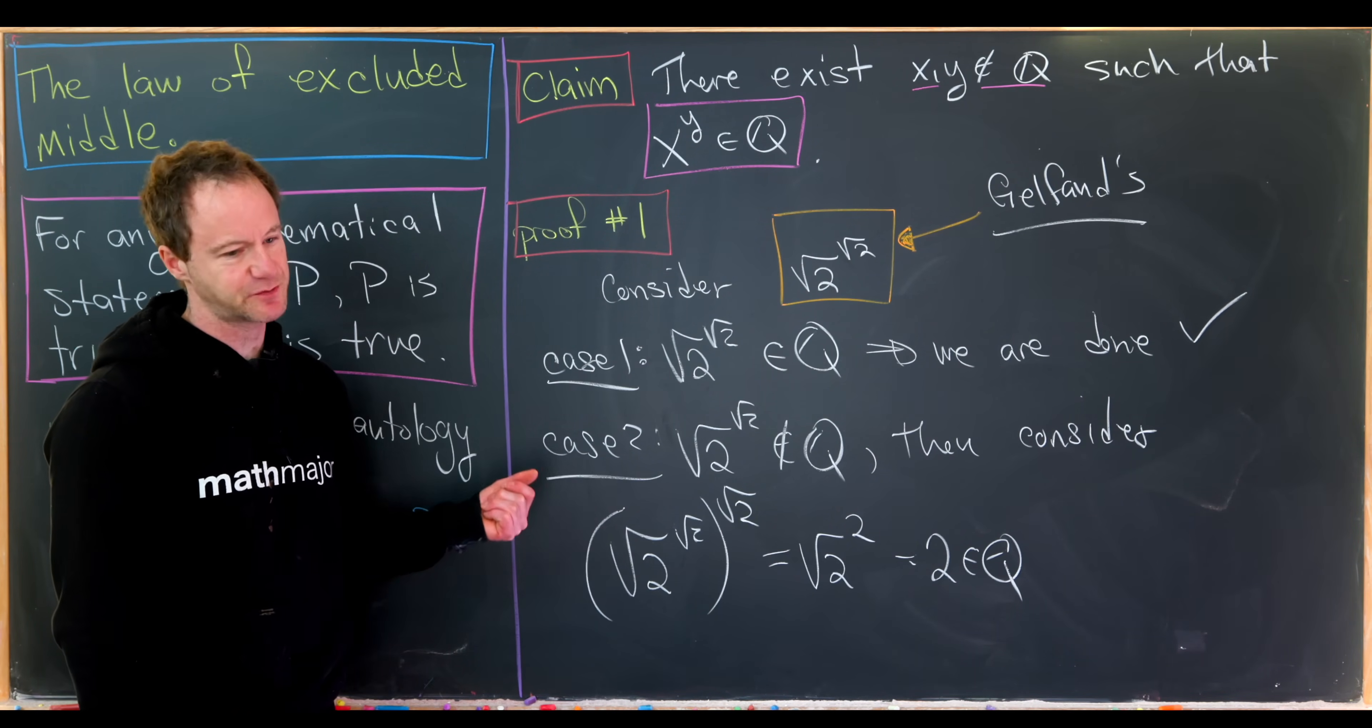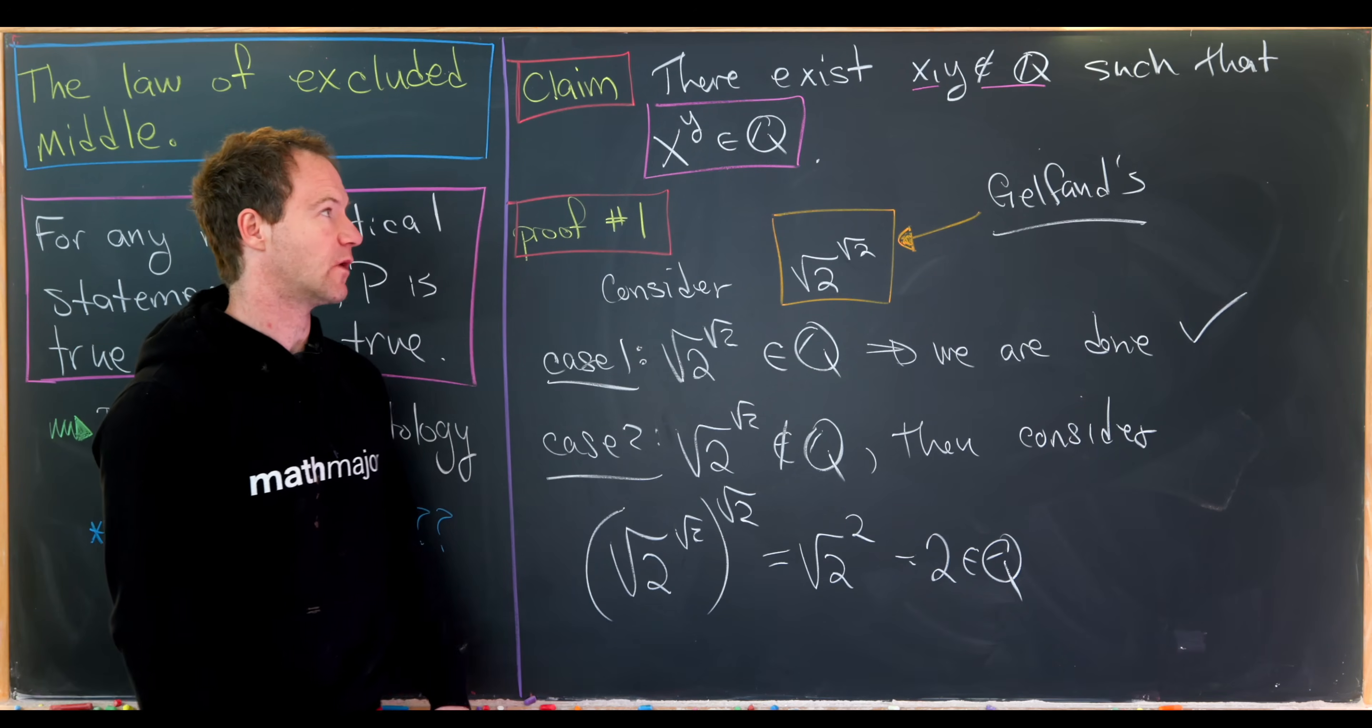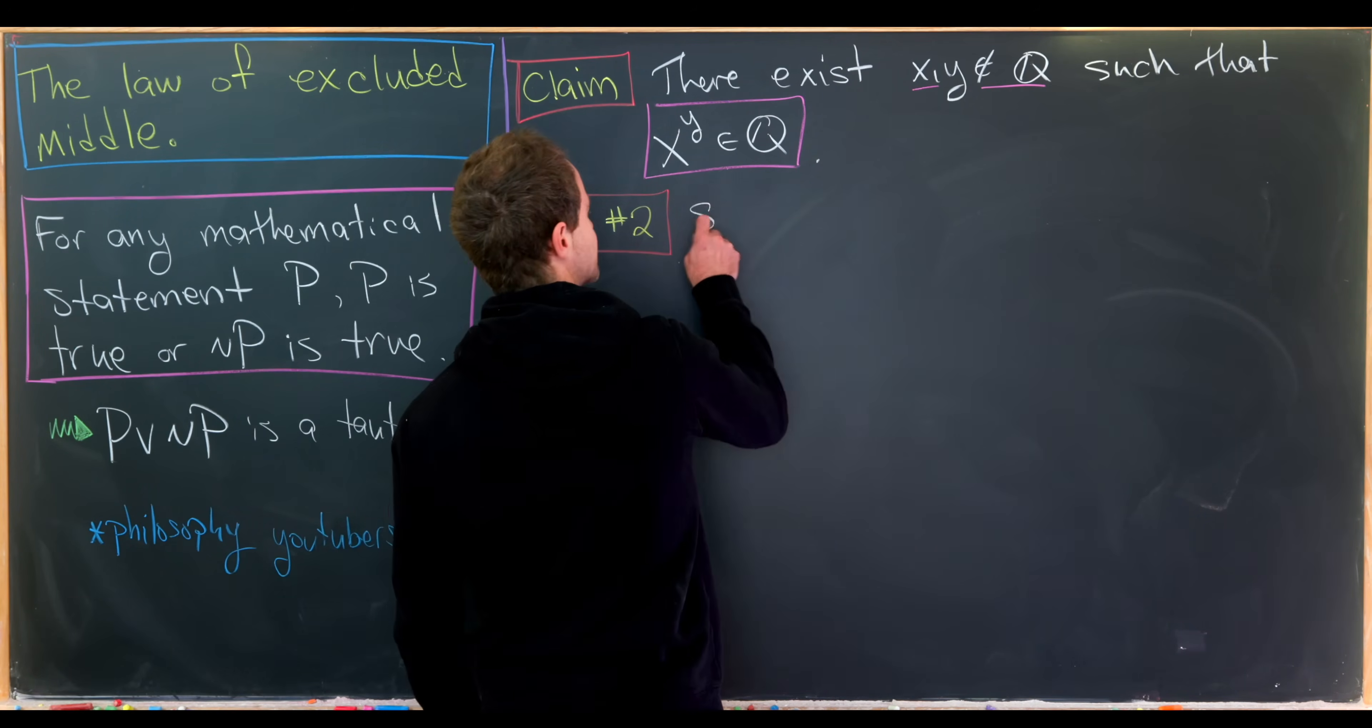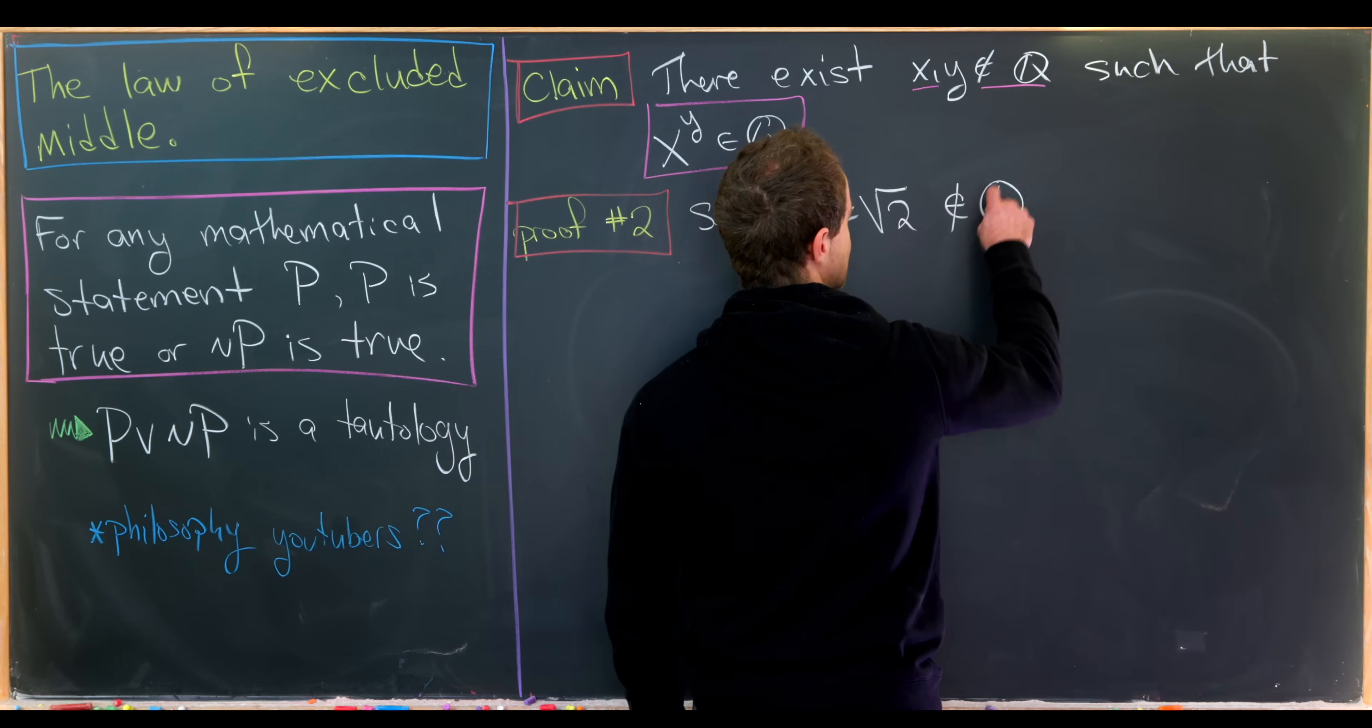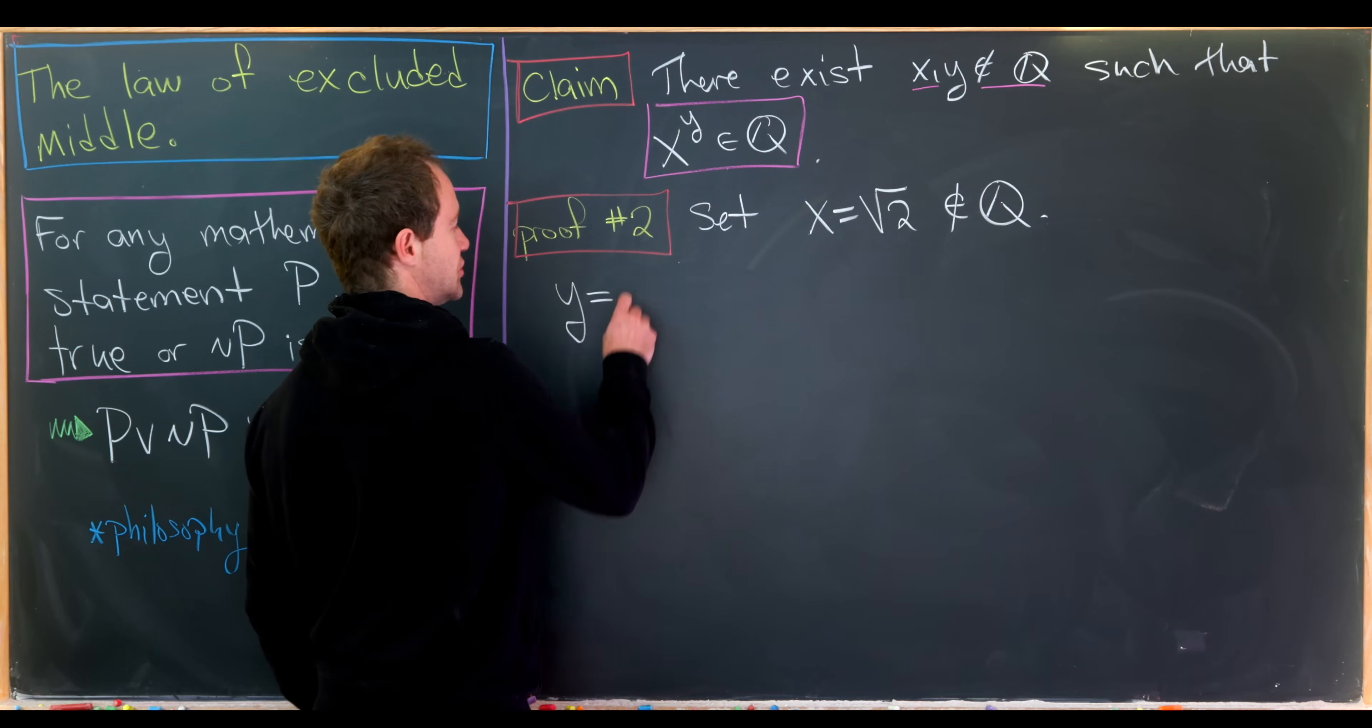Okay, so now that we've looked at this, which is probably the most classic proof of this result, let's look at a constructive proof. So that is we'll give concrete examples of x and y that are irrational that make this happen. So for our second proof, we're going to consider the following two numbers. And here we'll use x and y for these two numbers. We'll set x equal to the square root of 2. We know that is irrational, so I won't prove that. I will prove the other one is irrational, just for good measure. And so we'll set y equal to the log base 2 of 9.